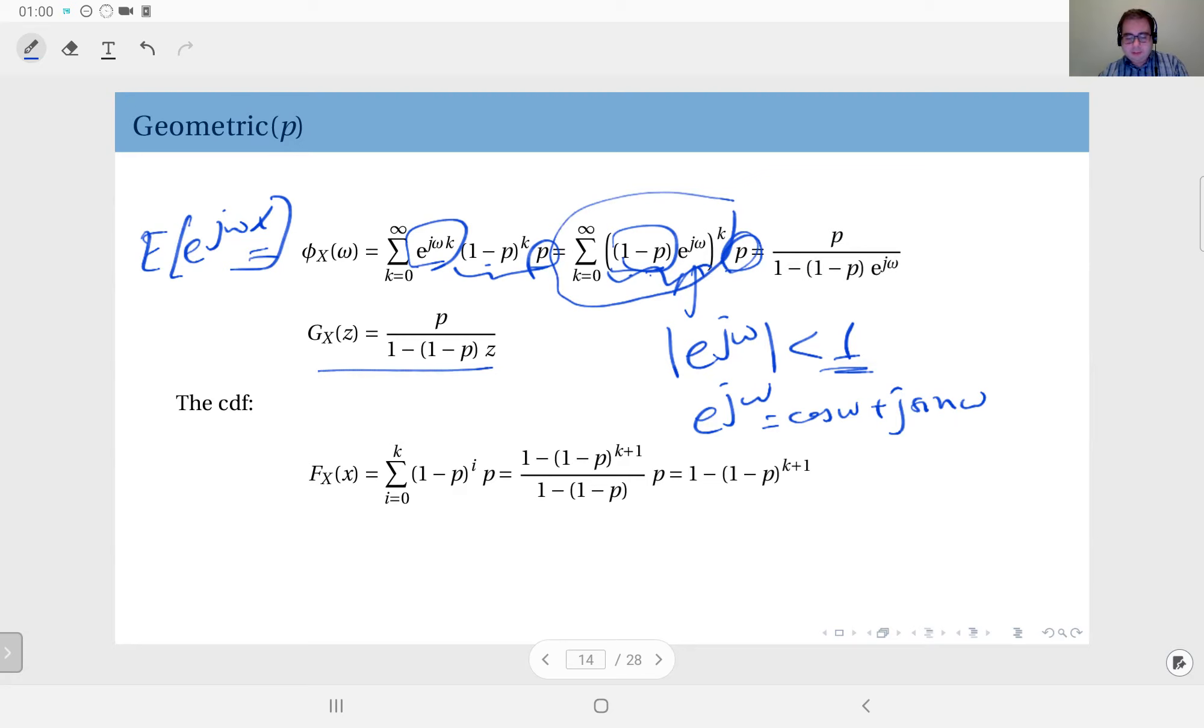And I will also give the CDF here at this point. This is by definition the probability that X is less than or equal to x. And you can compute this in two ways. The first one: well, this is the sum of the probabilities from 0 up until k inclusive. Well, this should be k here because I'm using k here.